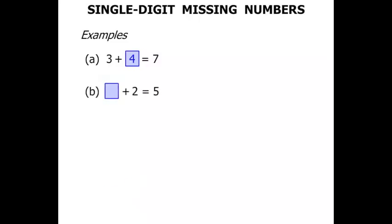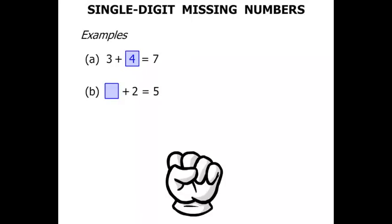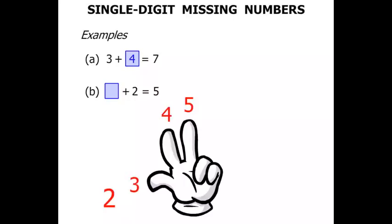The next one: something plus 2 equals 5. Okay, there's our hand. Alright, let's start with the 2. We need to add something to that to get 5. So we've already got 2 in our mind. Then 3, 4, 5. So to get to 5 we needed to add another 3.